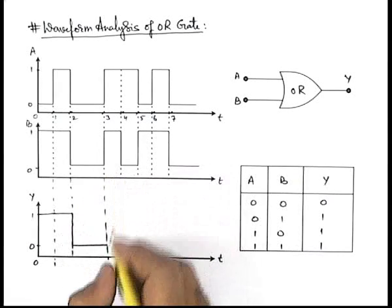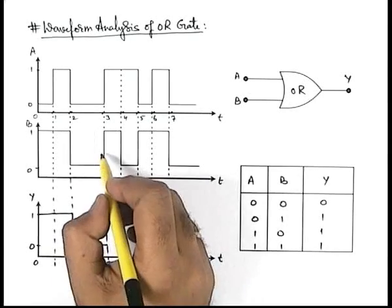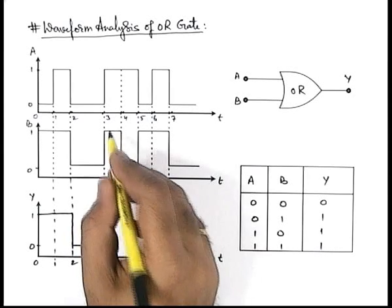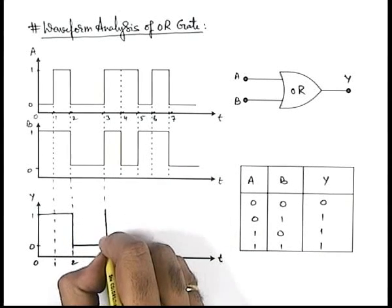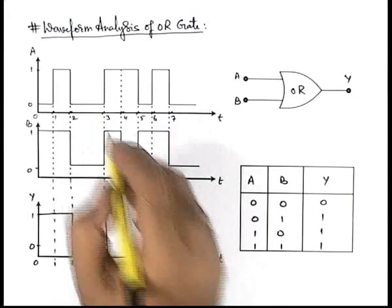And again from time instant t3, here you can see signal at A is in one state and signal at B is also in one state, so again it will further rise to one because both here are one.